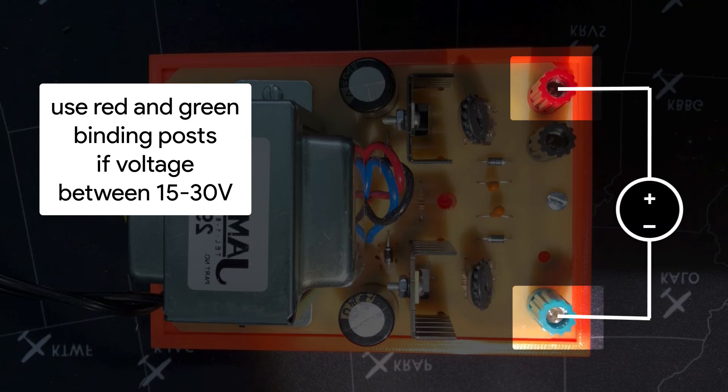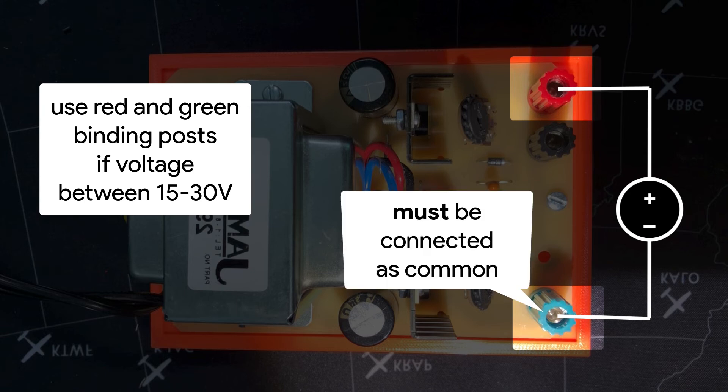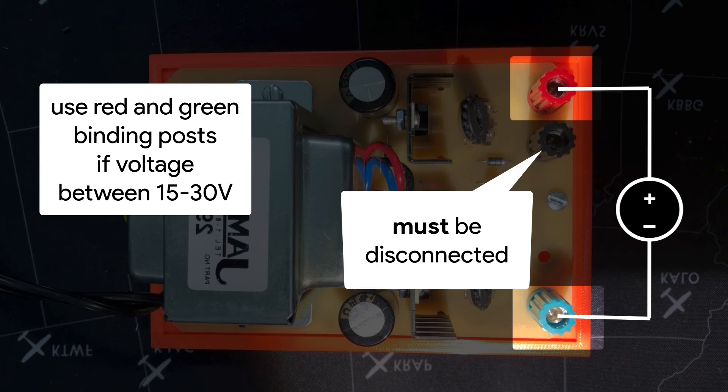If the required voltage is between 15 and 30 volts, the red and green binding posts can be used instead. The green binding post will need to be connected to a common ground, and the black binding post will be disconnected from the circuit.